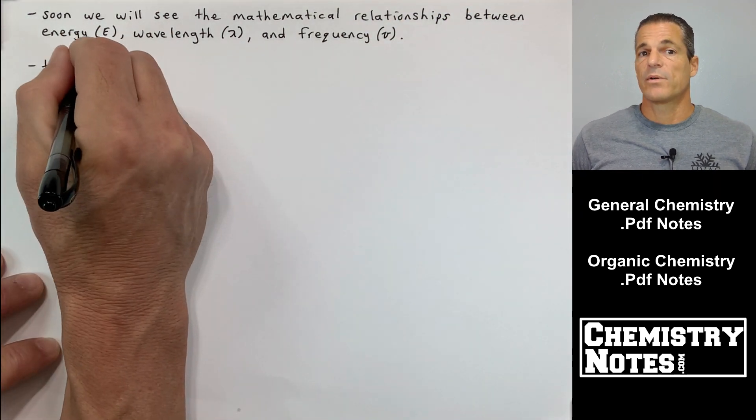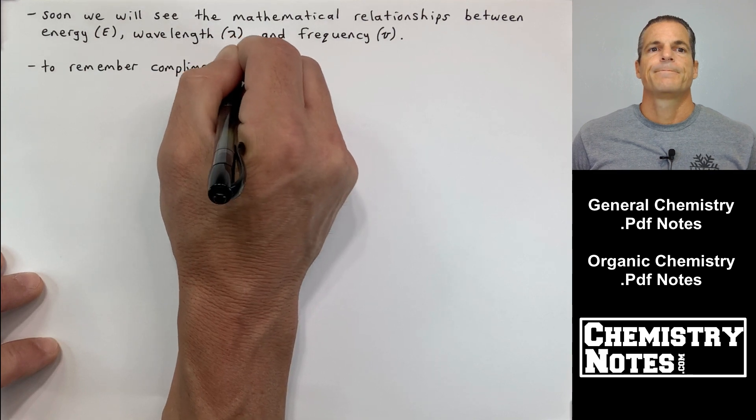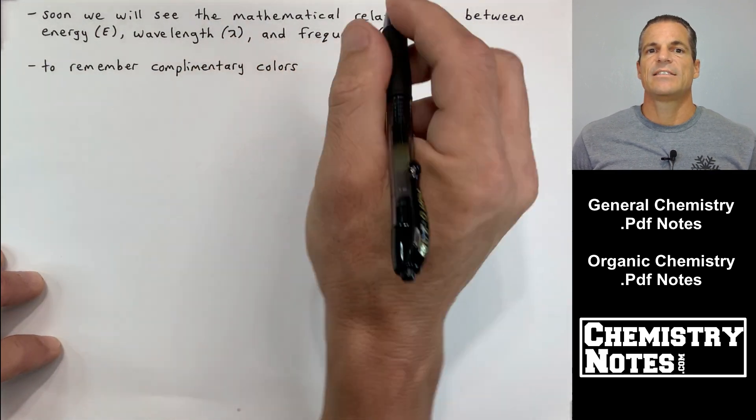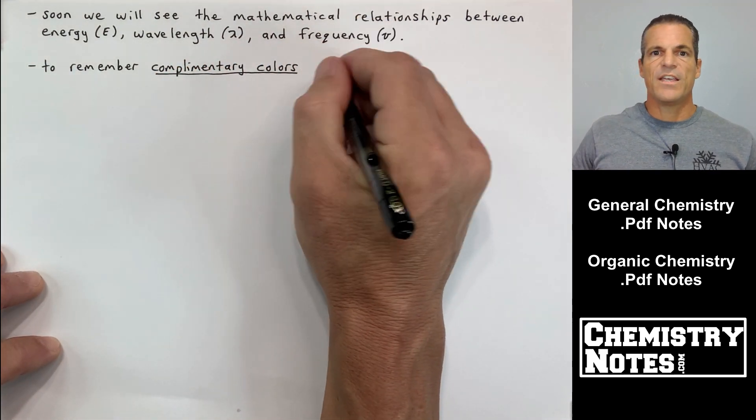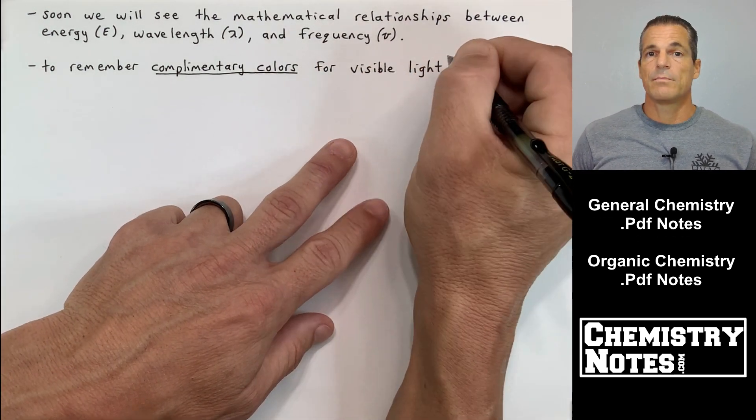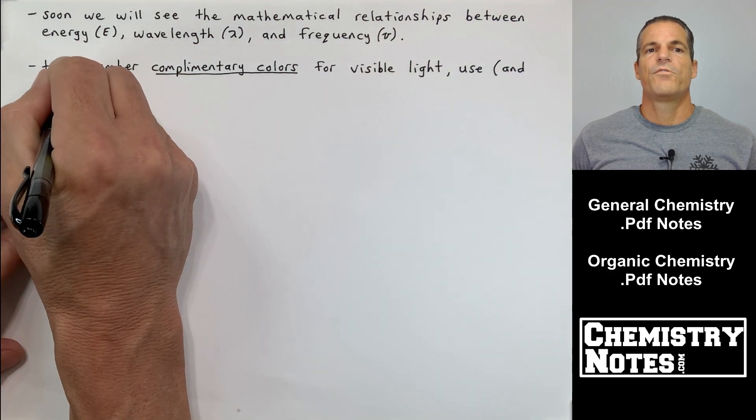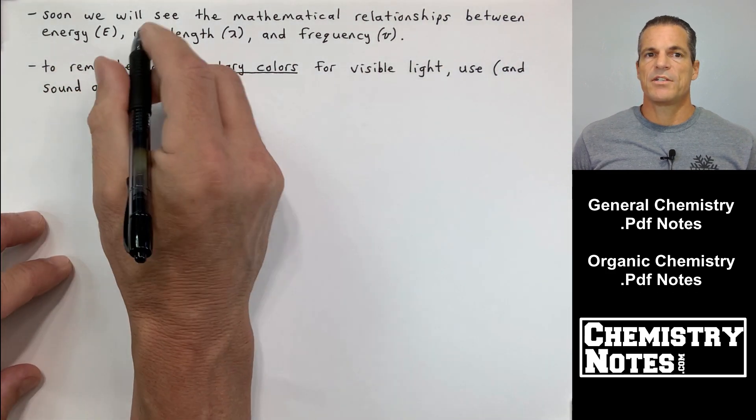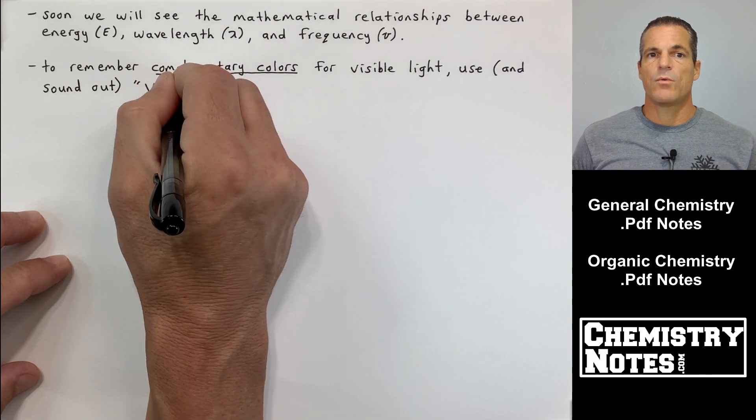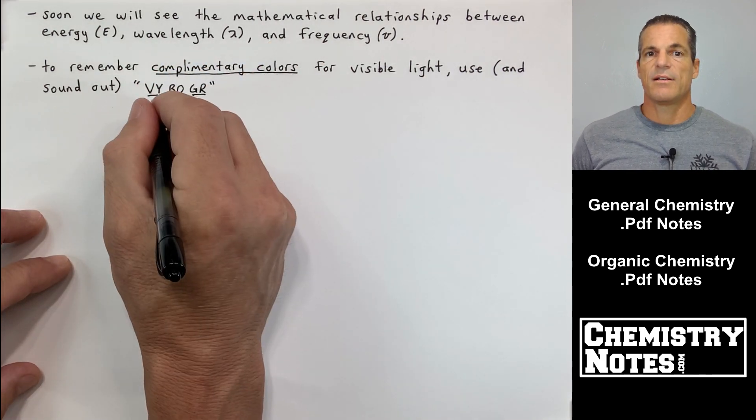Energy is given the symbol capital E. Wavelength has a little wishbone, the Greek symbol lambda. Frequency has a little Greek symbol nu. But before I get into that mathematical relationship between E, energy, wavelength lambda, and frequency nu, I want to talk about complementary colors.